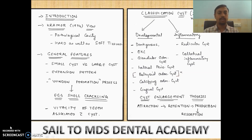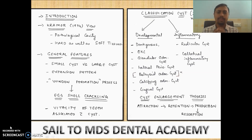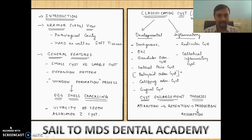In the inflammatory category, there are two variants: radicular cyst and collateral inflammatory cyst. In the developmental category there are: dentigerous cyst, odontogenic keratocyst, glandular odontogenic cyst, lateral periodontal cyst, calcifying odontogenic cyst, and gingival cyst. The botryoid odontogenic cyst is a variant of the lateral periodontal cyst. Regarding how the cyst gets enlarged, there is fluid attraction, fluid retention, production of internal hydrostatic pressure, which causes resorption of surrounding bone and the cyst enlarges.